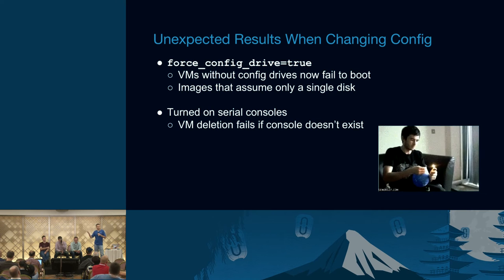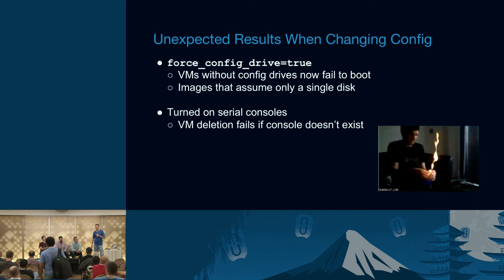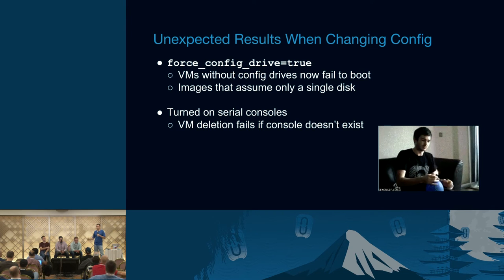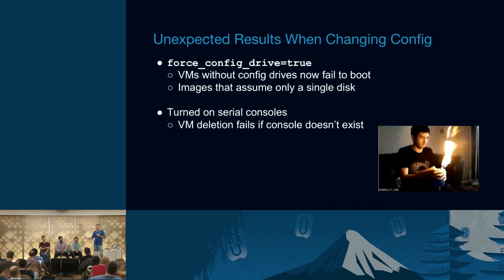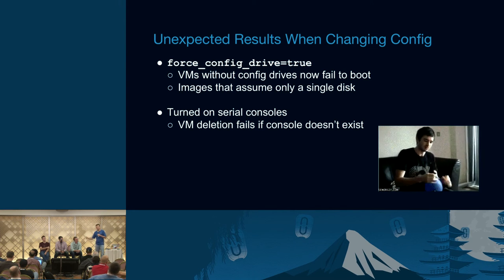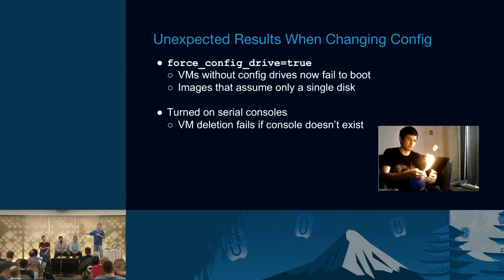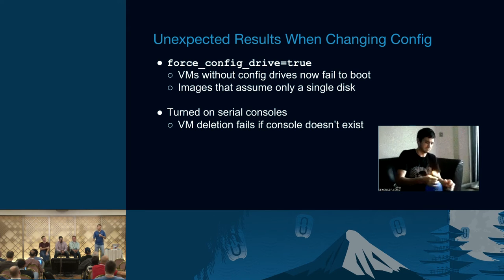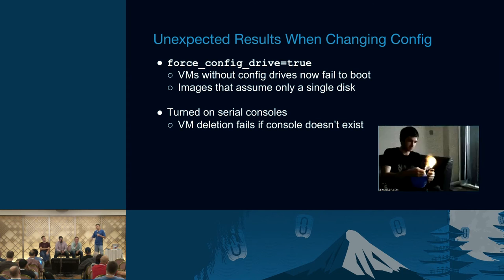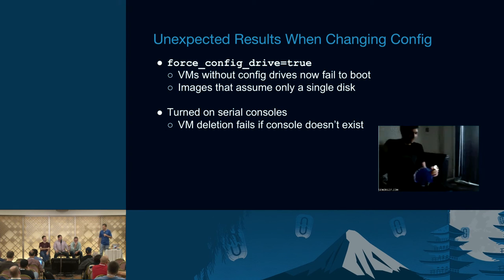A similar thing with serial consoles in Nova: we turned that on to enable some out-of-band access into the VMs. But we ran into a strange race condition where if the console device had been cleaned up or deleted ahead of time, Nova wouldn't be able to delete the VM because it would try to delete that device itself, couldn't find it, and would fail the whole operation. Now we've got a pile of accumulated cruft that we've got to go back to our cleanup scripts to reap. Just all these crazy things that happen that you don't necessarily think will occur.